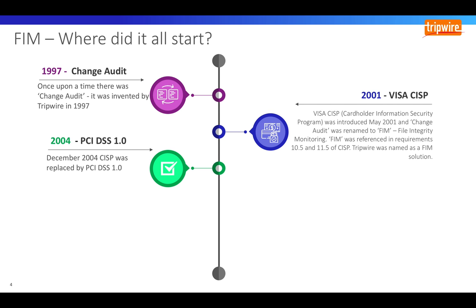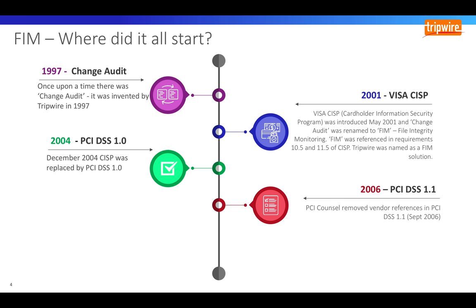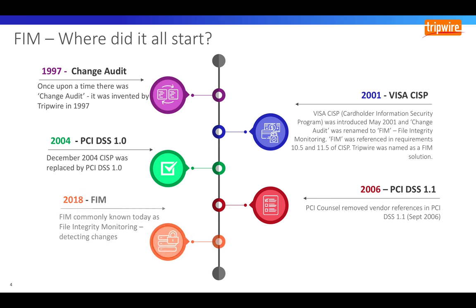At the end of 2004, CISP was used as the basis to create the Payment Card Industry Data Security Standard, or PCI DSS, and Version 1 was launched. In 2006 the PCI Council decided to remove all vendor references from the standard and launched PCI DSS 1.1. Over the years as the PCI DSS standard has evolved, File Integrity Monitoring is still a key requirement referenced currently in 10.5.5 and 11.5 of the standard. FIM and change detection is also mentioned in other standards and policies as well.